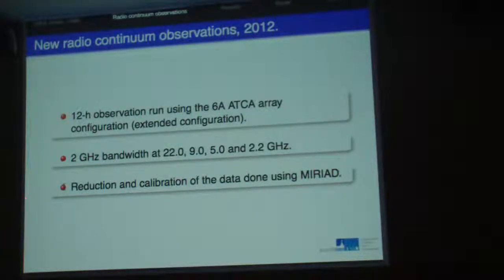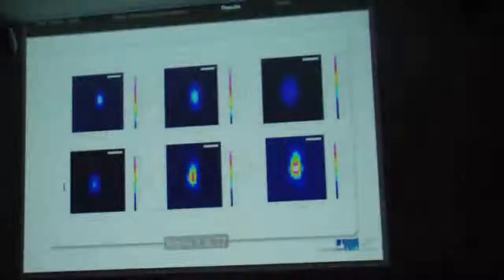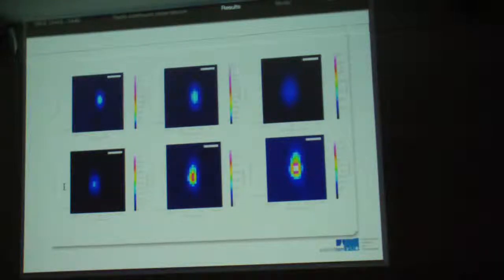We observed the source for a total of 12 hours using 2 gigahertz bandwidth centered at 22 gigahertz, 9, 5, and 2.2 gigahertz. We split the bands. In order to generate extra points in the spectral energy distribution, we split the bands at 22 gigahertz, 9 gigahertz, and 5 gigahertz.